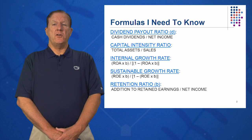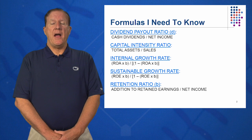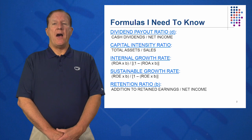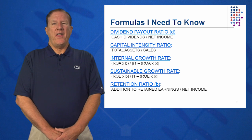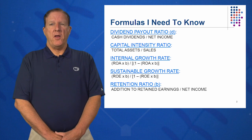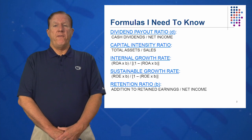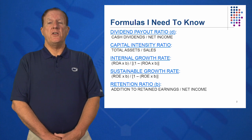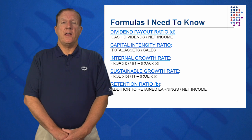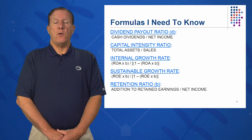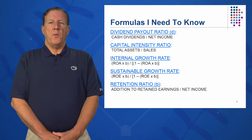First, the dividend payout ratio. I have net income in my company — do I keep it or do I give it away? The dividend payout ratio looks at how much you pay out in the form of cash dividends: cash dividends divided by net income. We're going to call that D. The author also looks at the retention ratio — addition to retained earnings divided by total net income — which we call B. So D equals 1 minus B, and B equals 1 minus D.